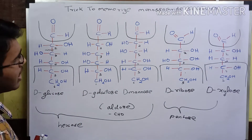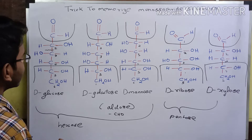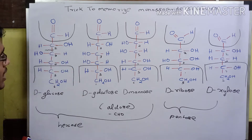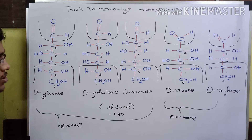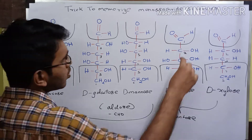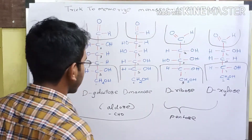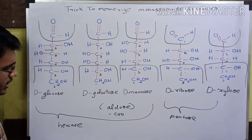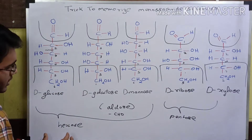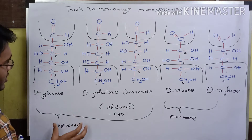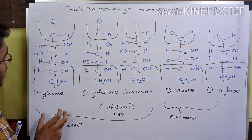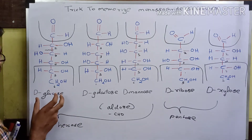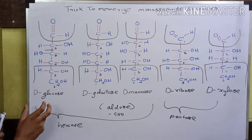The first carbon atom is also the same throughout all 5 molecules — it is the aldehyde functional group, because all these molecules are aldoses. Now we must see how to memorize the in-between carbon atoms: that is 3 carbon atoms in the case of hexoses and 2 carbon atoms in the case of pentoses. Let us first discuss the structure of glucose.